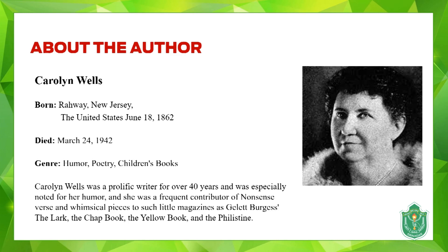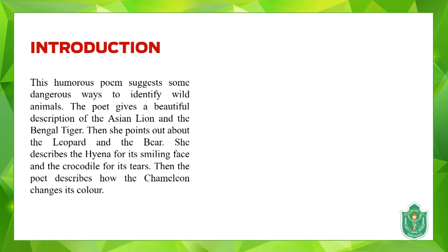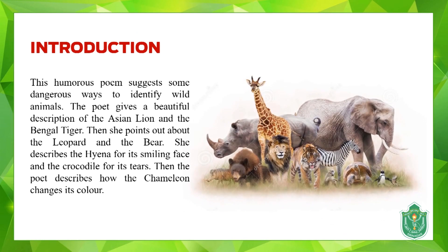She was a frequent contributor of nonsense verse and whimsical pieces to little magazines such as Gelett Burgess's 'The Lark,' 'The Chapbook,' and magazines like that. This is a humorous poem where she tells us different ways of identifying wild animals if we encounter them. It suggests some dangerous ways to identify wild animals — dangerous because these animals are wild and encountering them will always involve danger.